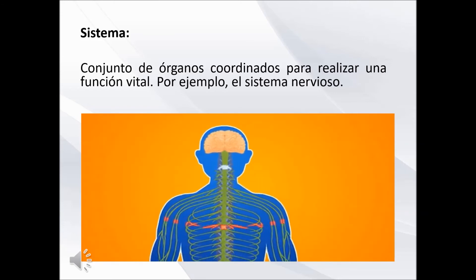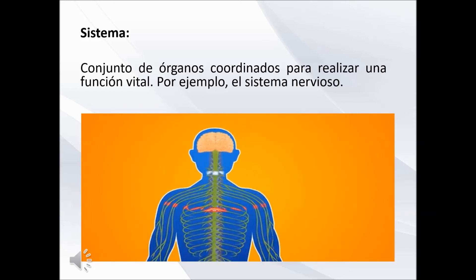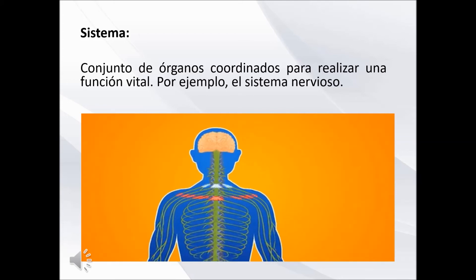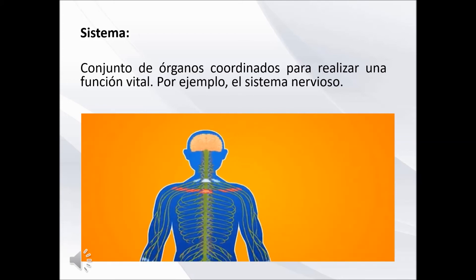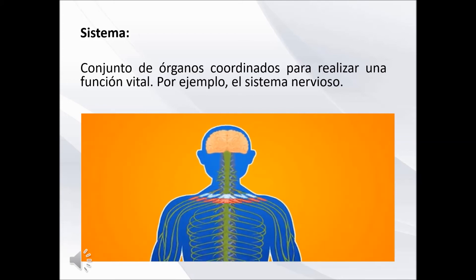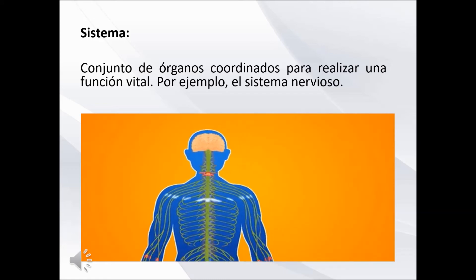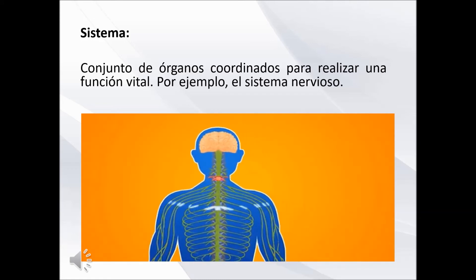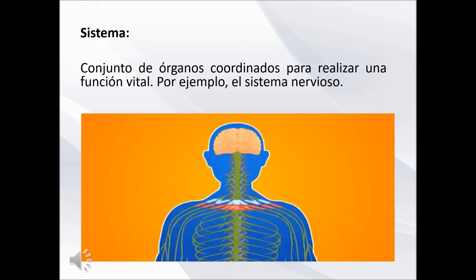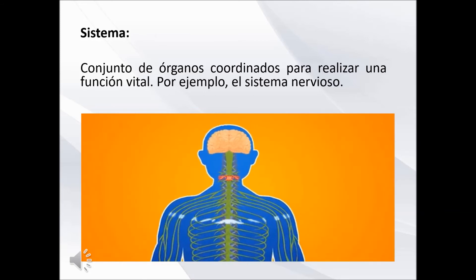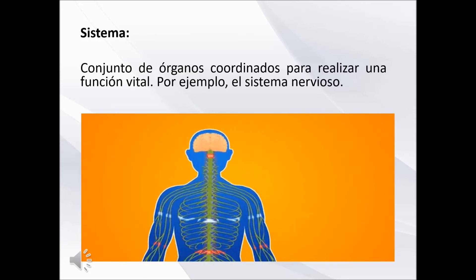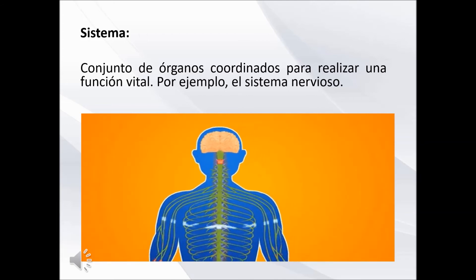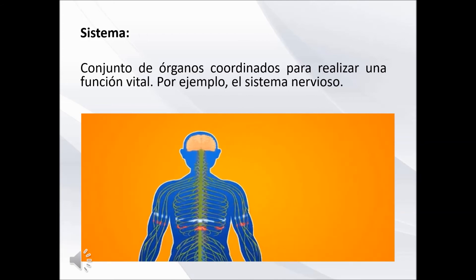El cuarto nivel de organización corresponde a los sistemas. Varios órganos que realizan conjuntamente una función forman un sistema. Como ejemplo, está el sistema digestivo, que realiza la digestión de los alimentos. Está formado por varios órganos: la boca, el esófago, el estómago, el intestino delgado y el intestino grueso.